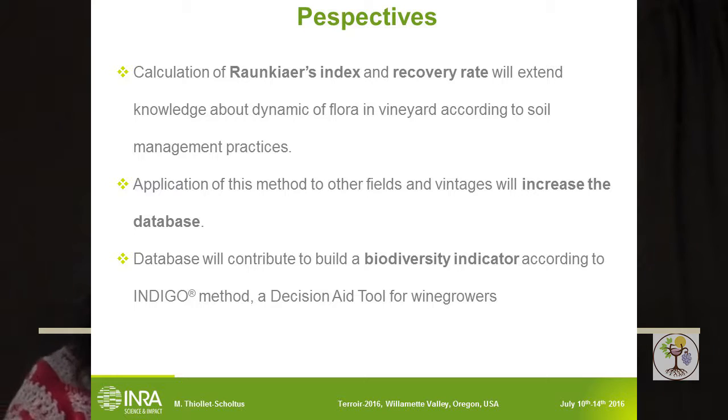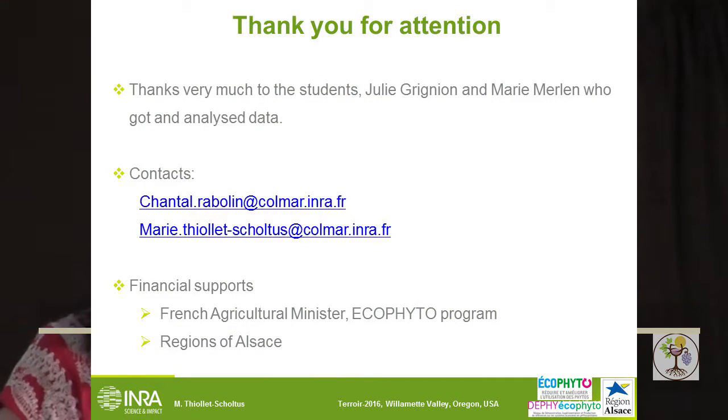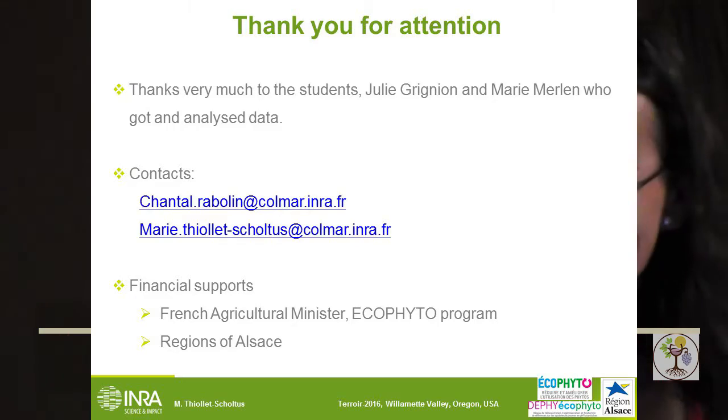Until 2018, we are going to calculate the Shannon index — an index to assess quality of flora in the field — and the recovery rate, to increase our database. The database will contribute to building references and knowledge to construct a biodiversity indicator according to the Indigo method, which is a decision-aid tool for wine growers — this is the practical application of our research. I would like to thank students Julie Grignon and Marie Merlin, who did a fantastic job on the experiment, and also the French agricultural ministry and the Alsace region for financial support. Thank you for your attention.